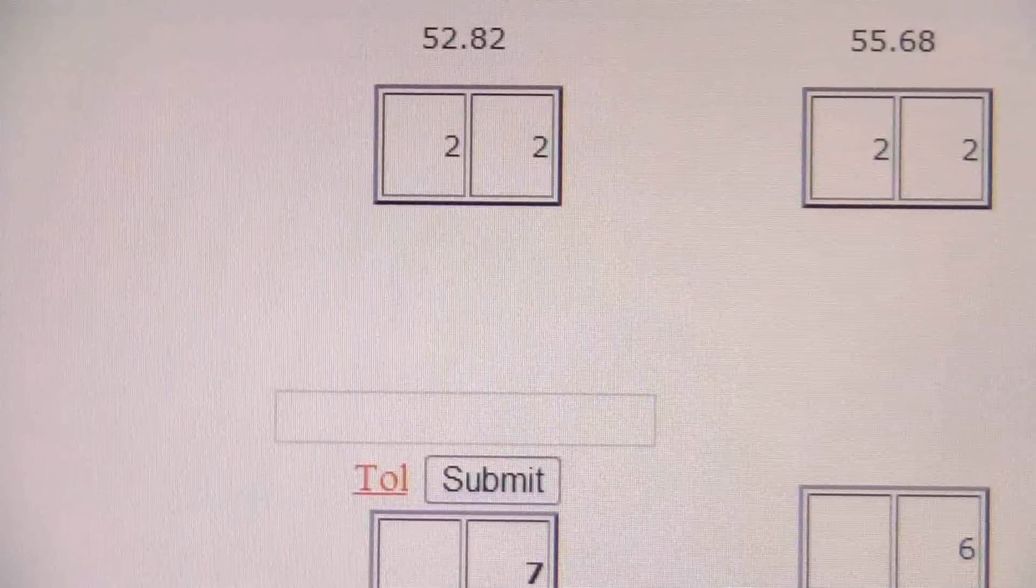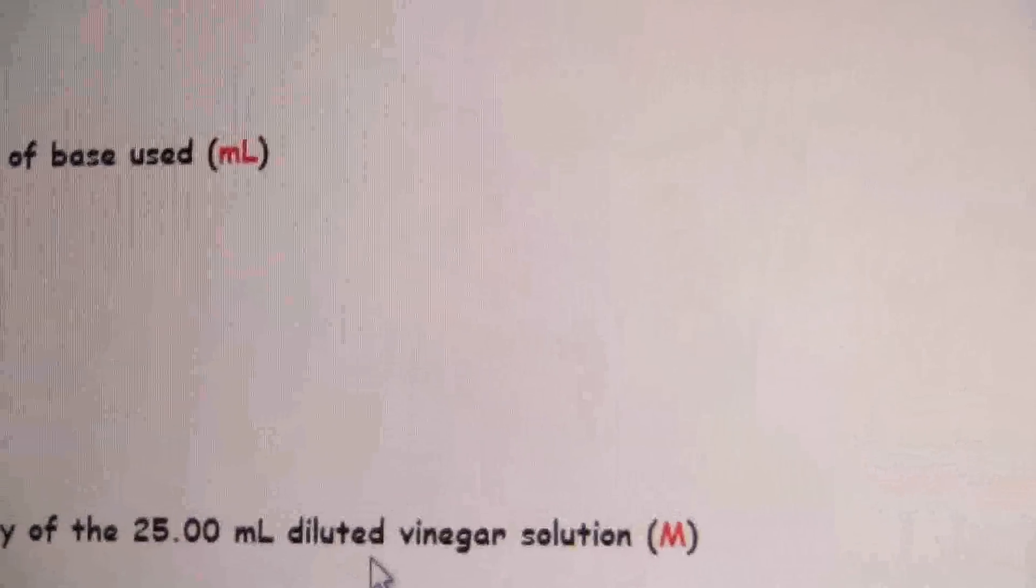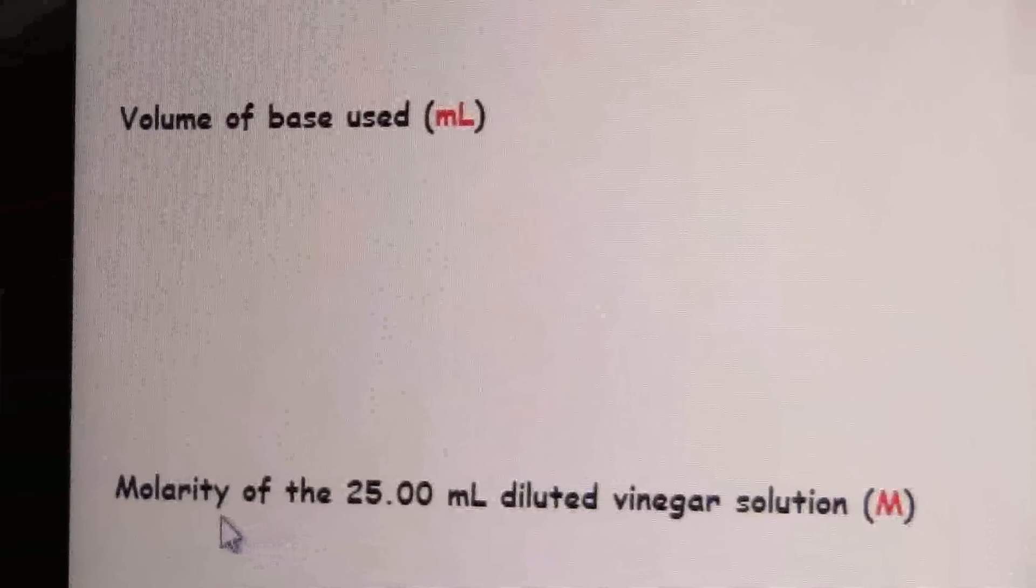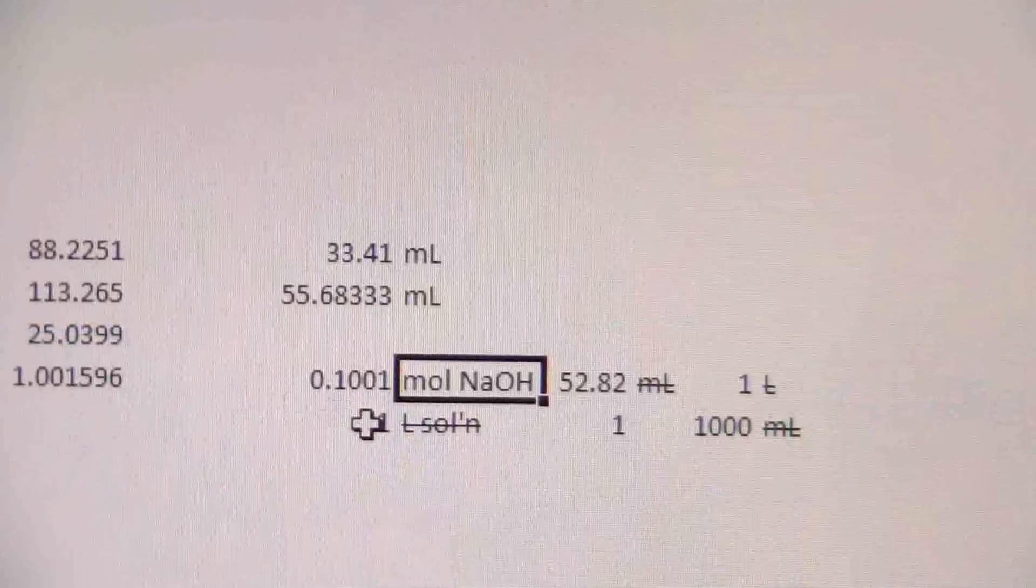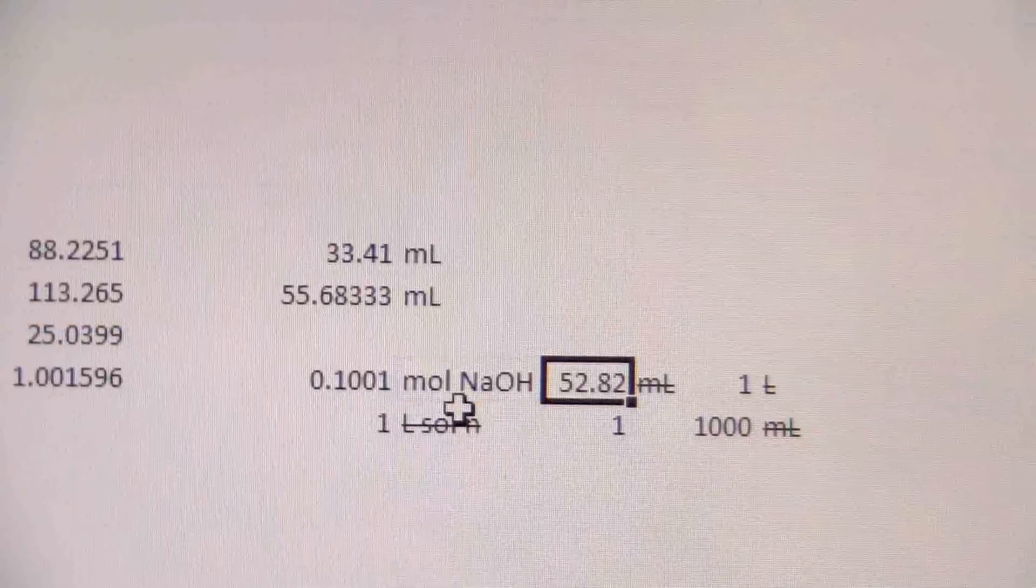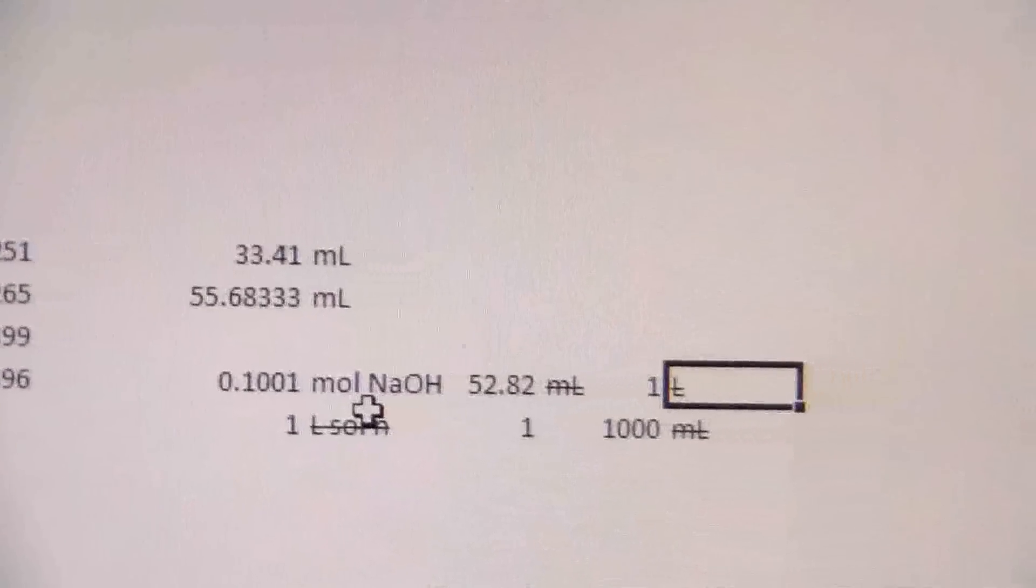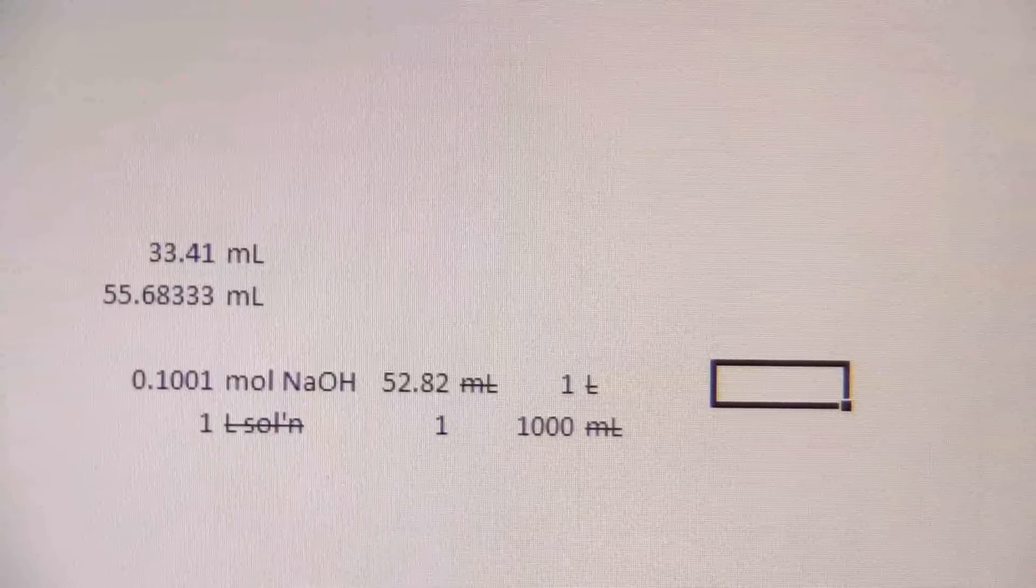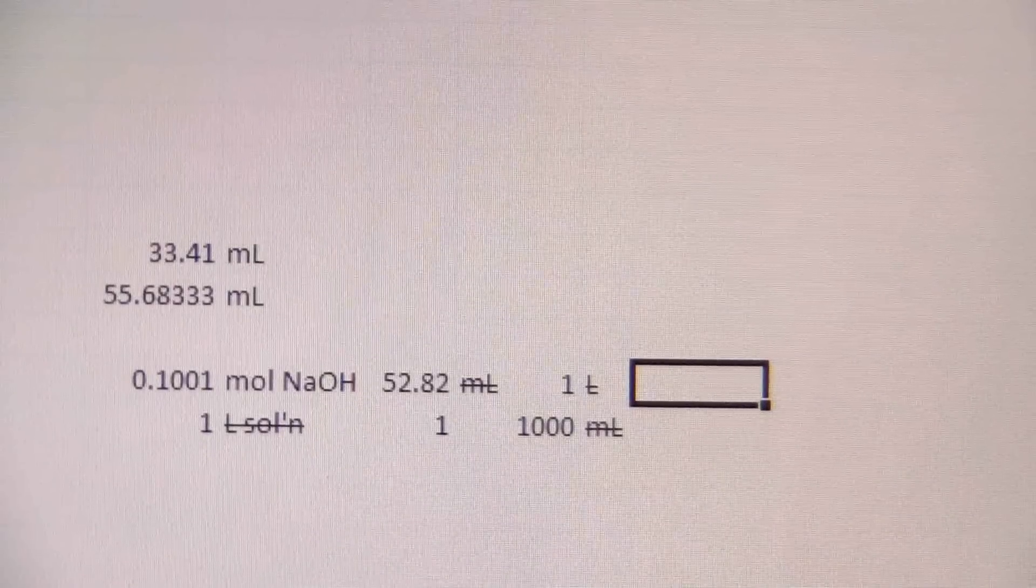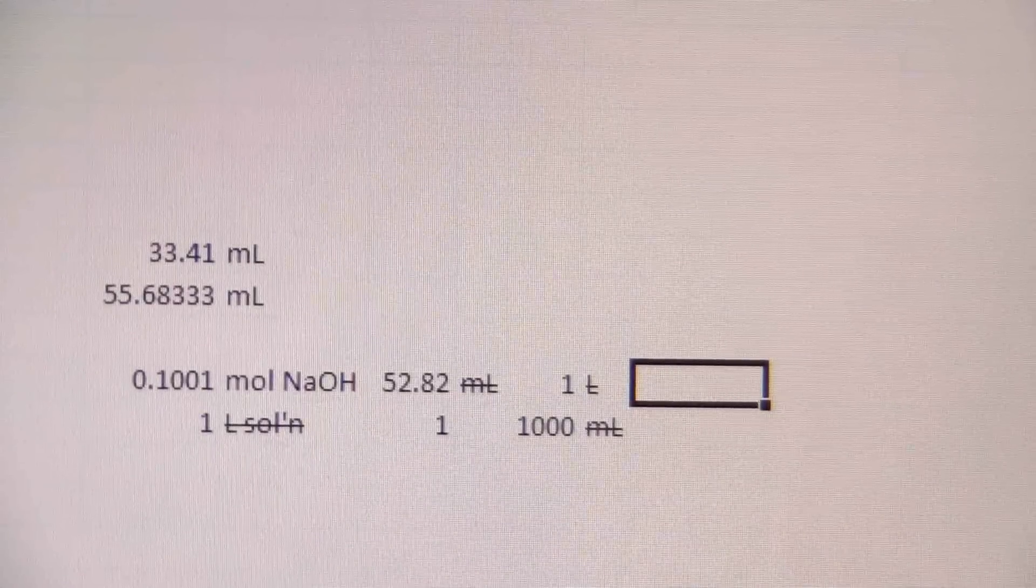And again, this would be milliliters, but the milliliters won't cancel directly. So what I'm going to do is, and I can just put this over one if you want to see something there, but there are 1,000 milliliters to one liter. So I can write this like that. And now you see my milliliters will cancel.